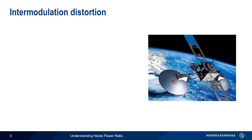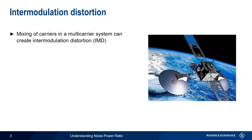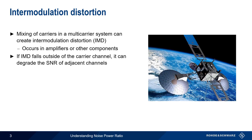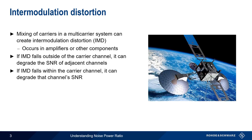One issue with multi-carrier signals is that these carriers can mix with each other, creating intermodulation distortion, or IMD. This occurs primarily in amplifiers, but can happen in other components within the signal chain. There are two potential problems created by this intermodulation distortion. If the products fall outside of the carrier channel, they can create interference and lead to a decline in signal-to-noise ratio in adjacent channels. Another serious problem occurs when this IMD falls within the carrier channel itself and degrades its own SNR.